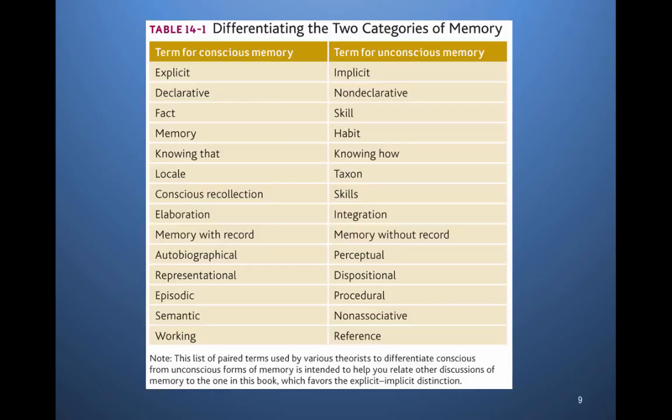Unconscious memory is implicit and generally non-declarative. There are skills, habits, and knowing how to do something. For example, you know how to ride a bike, but if you were to try to describe all aspects of your memory surrounding learning how to ride a bike, you really wouldn't be able to do so.